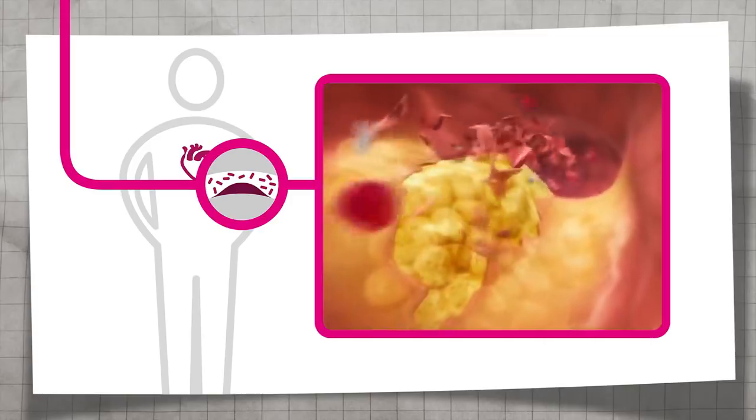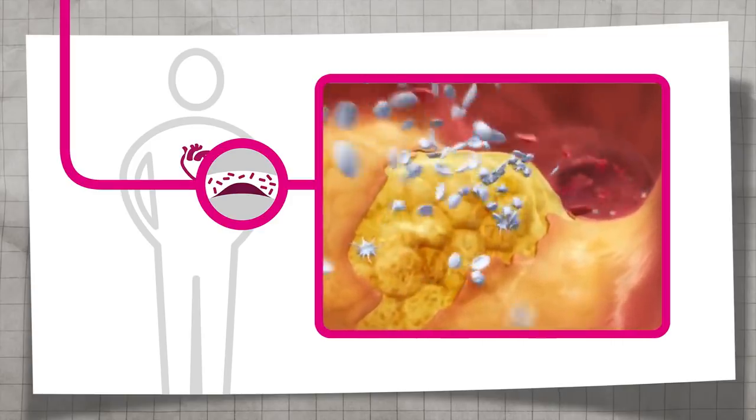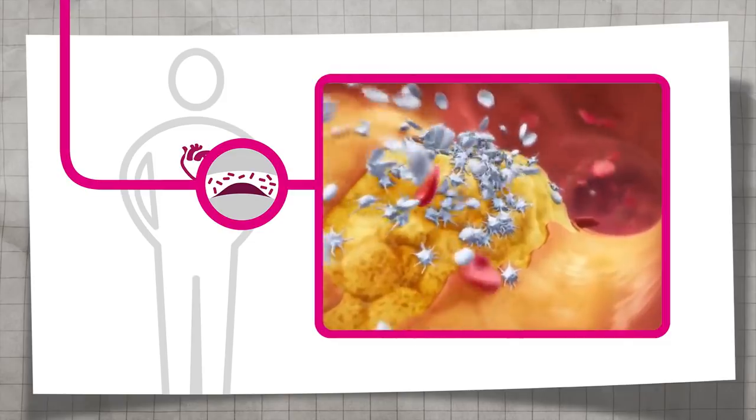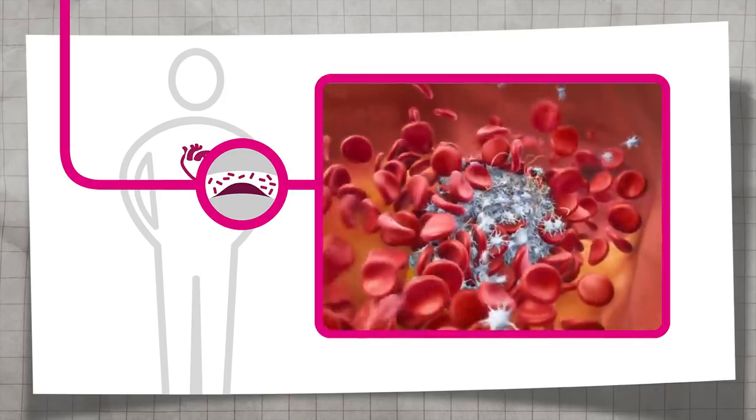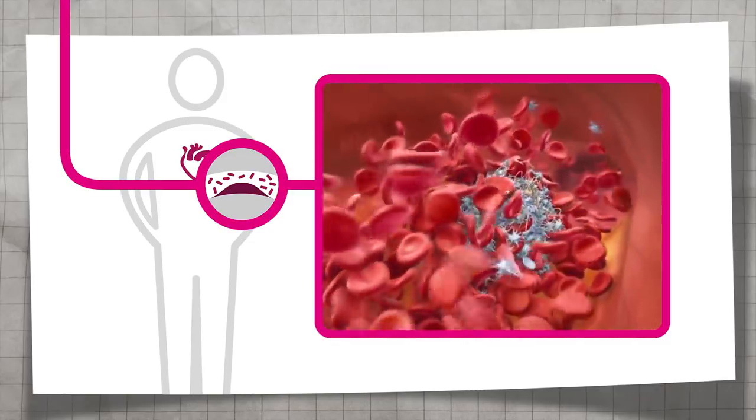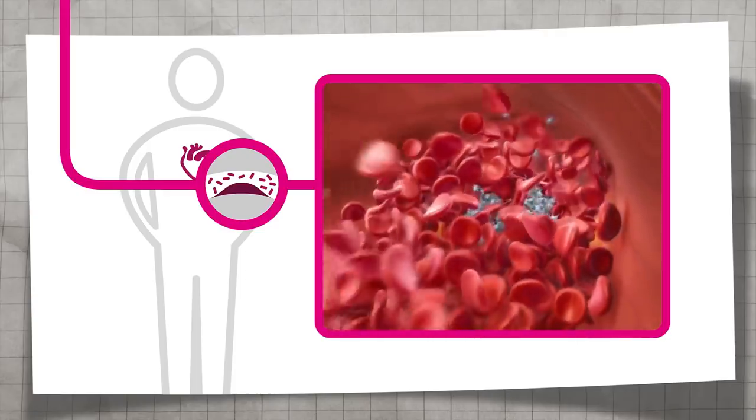Rupture of one of these plaques can lead to the formation of a blood clot in the lumen of the artery, known as atherothrombosis. This blood clot can grow to further limit or even completely block blood flow through the artery.